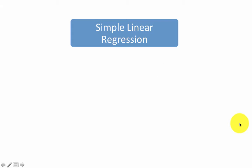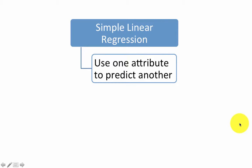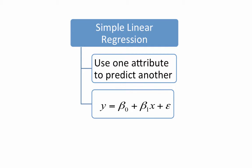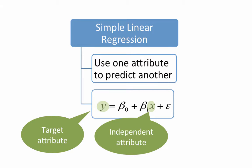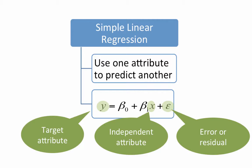In simple linear regression, we're trying to predict one attribute based on one other attribute — one predictor attribute, one target attribute. The equation therefore will be y, the target attribute, equals beta 0 plus beta 1 times x, the predictor attribute, plus some error term epsilon, because our prediction of beta 0 plus beta 1 x is not going to be exact. The points will not fall on an exact line and therefore there will be some kind of error term.